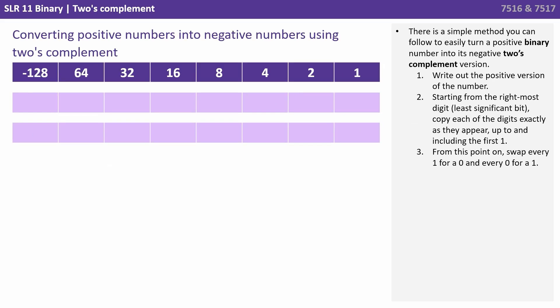Now there is a simple method you can follow to easily turn a positive binary number into its negative two's complement version. You follow three steps. One, write out the positive version of the number.